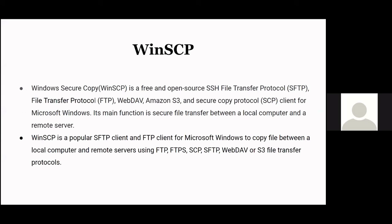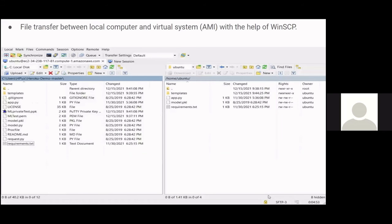To facilitate file transfer between our local computer and the server, we use WinSCP — Windows Secure Copy — which is a free and open-source client for protocols like SFTP, FTP, WebDAV, Amazon S3, and SCP for the Microsoft Windows platform. Here we can see WinSCP in action: the left side is our local computer and the right side is the machine image. We have copied the templates folder, app.py, model.pkl, and requirements.txt from our local computer to the machine image.